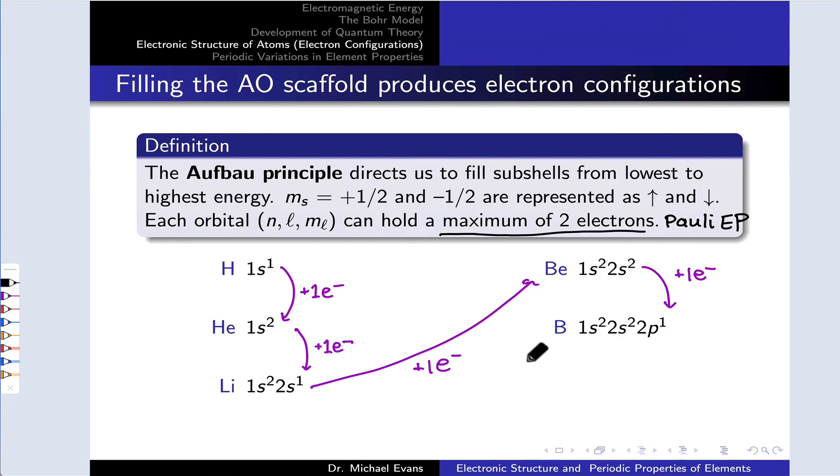And the Aufbau principle we've seen already, this slide is just dedicated to it. It directs us to fill subshells from the lowest to the highest energy. And we represent those up and down spin electrons as we fill as up and down arrows, and once we've got a pair of up and down arrows in a particular orbital, we're done filling electrons in that orbital due to the Pauli exclusion principle. So each orbital, which is associated with three quantum numbers - principal, orbital, and magnetic, n, l, and m sub l - can hold a maximum of two electrons.